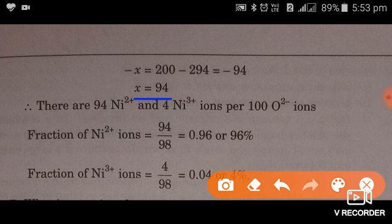Now 98 minus X will be equal to 4. This has already been shown above, the Ni3+ will be 98 minus X. If X is 94 then by solving this we will get 4 Ni3+ ions per 100 oxide ions.